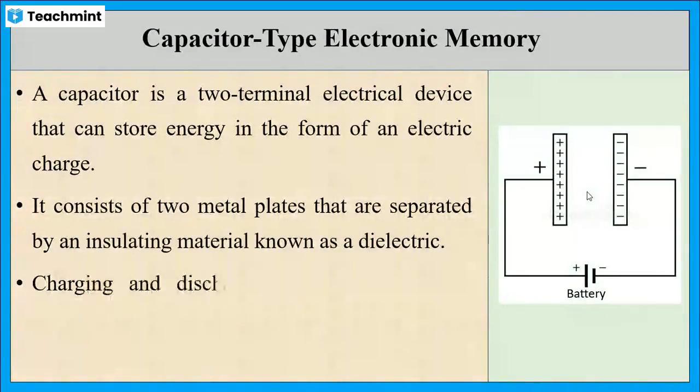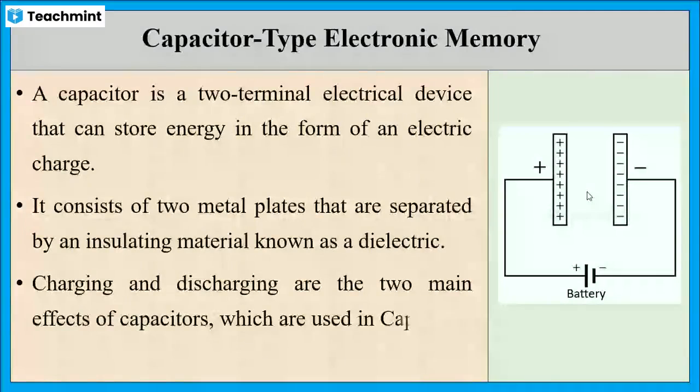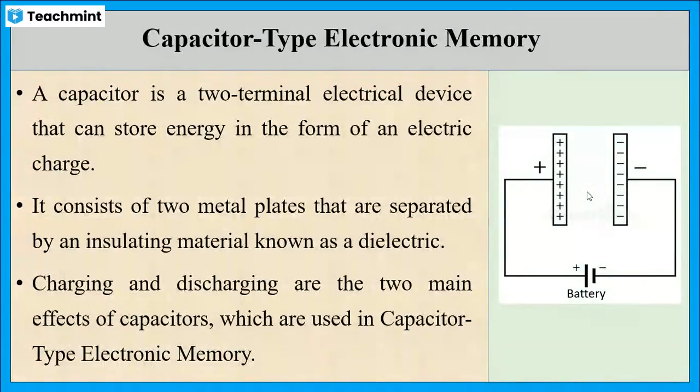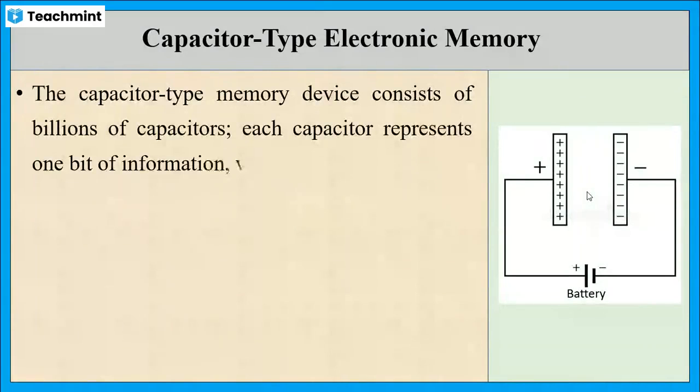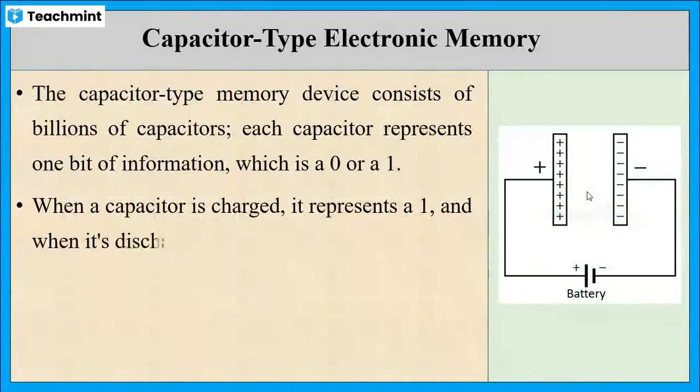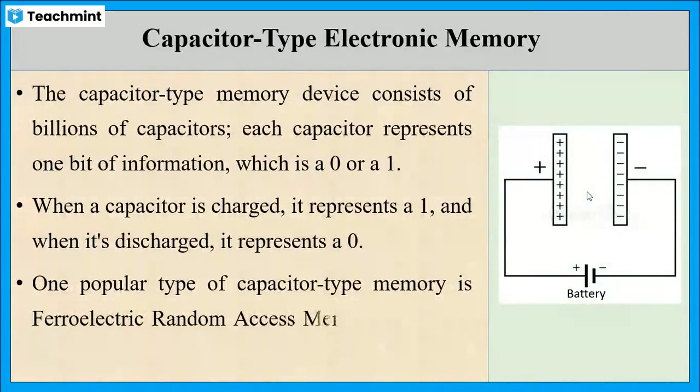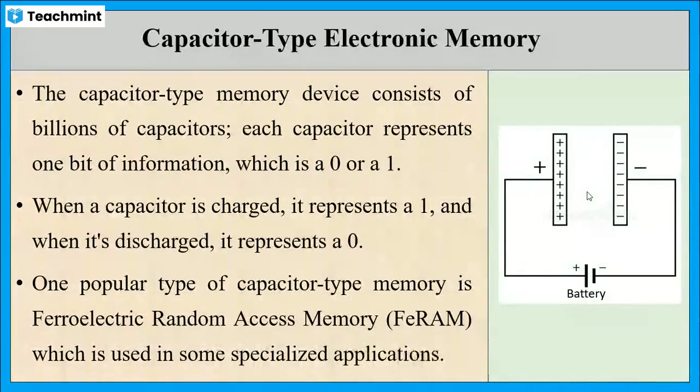The capacitor can be charged or discharged. This property of the capacitor is used in capacitor type electronic memory devices. This type of device consists of several capacitors and each capacitor represents any one binary digit, either 0 or 1. When a capacitor is charged, it represents binary digit 1, and when it is discharged, it represents bit 0. Ferroelectric RAM or FE RAM is one of the examples for this type of electronic memory.